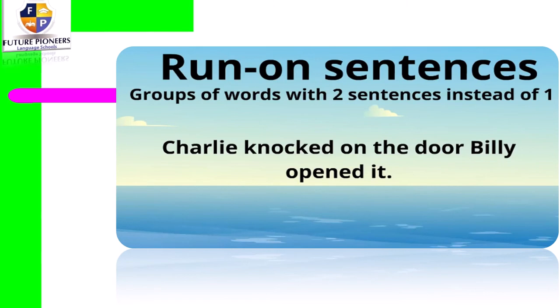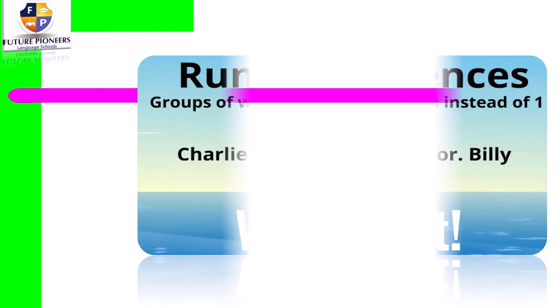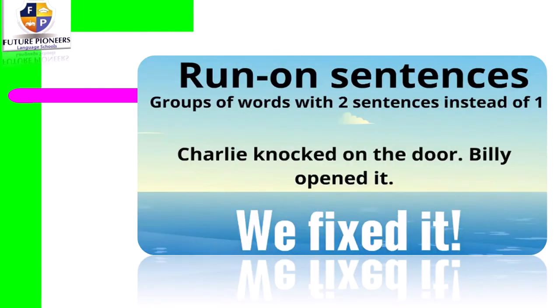Let's see the first example: 'Charlie knocked on the door Billy opened it.' I can see here two subjects and two verbs. Can you tell me — is it right? No. How can I fix it? I'm going to start with a capital letter: 'Charlie knocked on the door,' then put a full stop, then start the second sentence with a capital letter: 'Billy opened it,' and then put a full stop at the end.